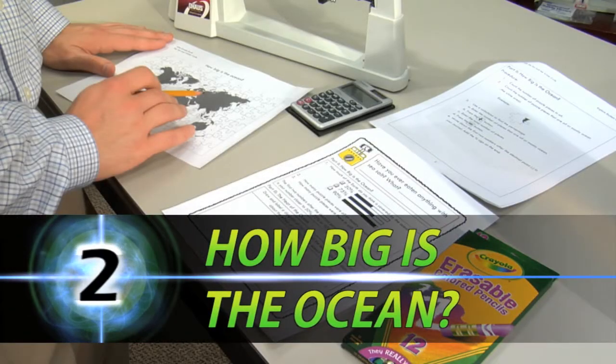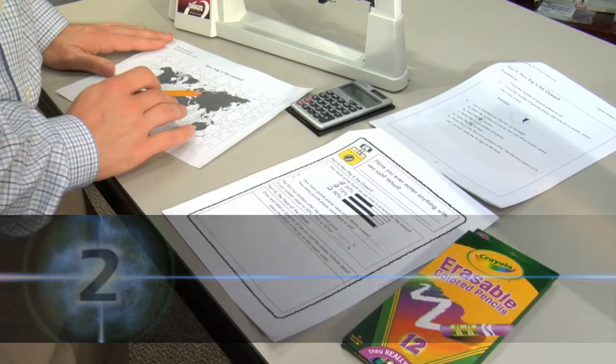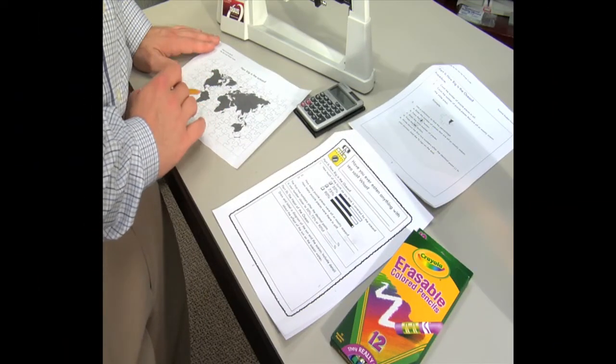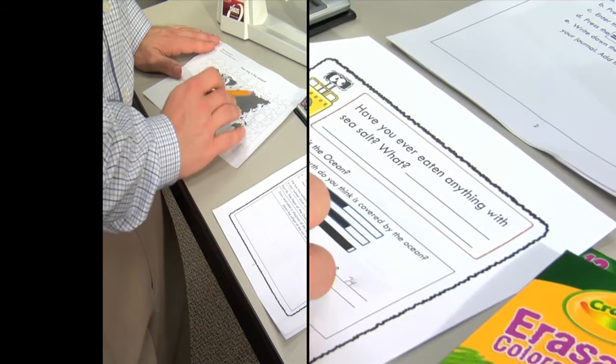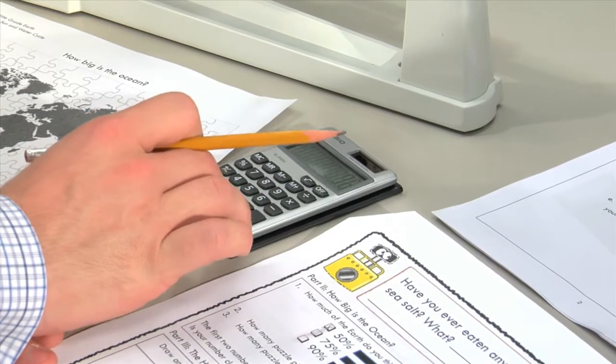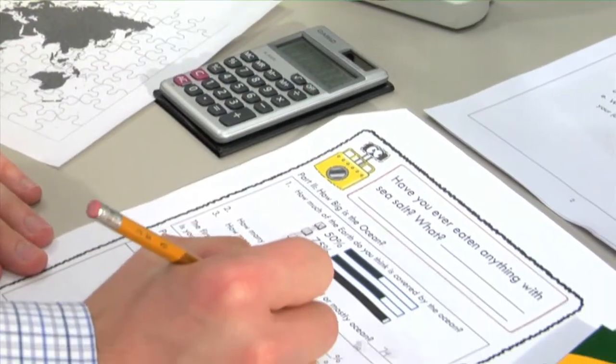Calculating the size of the ocean. Use the ocean puzzle to determine what percentage of the earth is covered by water. Divide the puzzle pieces that encompass ocean by the total number of pieces on the puzzle. Record these calculations.